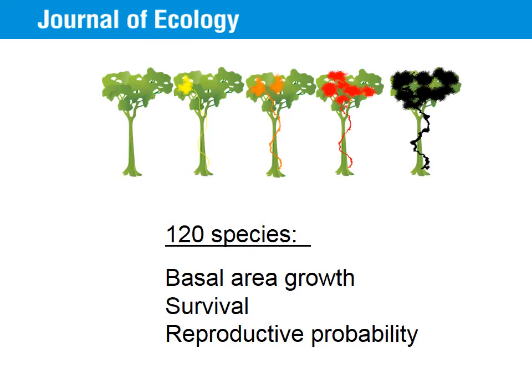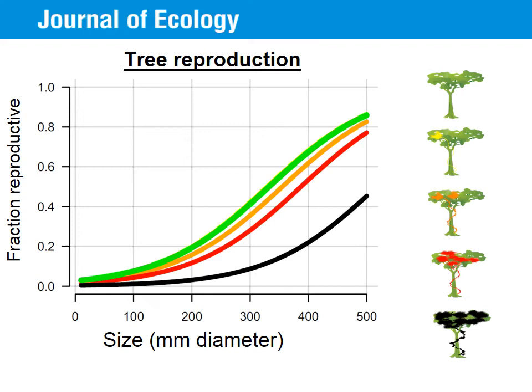To do so, we used hierarchical models, which means we fit models that describe the community average trends and model trends for individual species simultaneously. We will first focus on the average effects for the community across all 120 species. This graph shows the fraction of trees that are reproductive on the y-axis plotted as a function of tree size on the x-axis. The model shows that the fraction of trees that are reproductive tends to increase with size, but that this increase is slower for trees severely infested by lianas. Trees with less than 50% of their crown infested suffer less and are statistically similar to trees without lianas.